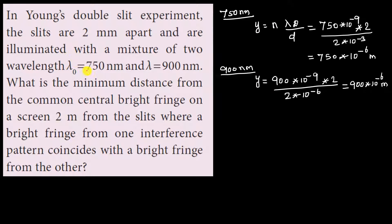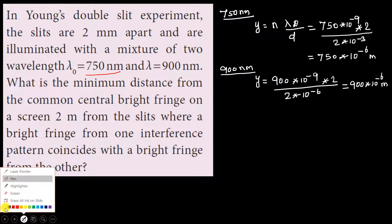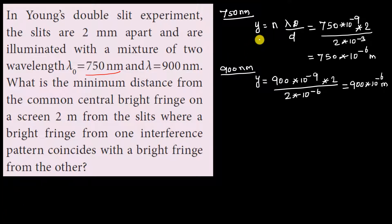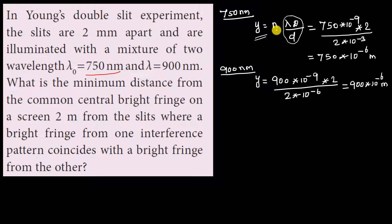First, for 750 nm wavelength, we use the formula y equals n times lambda times D divided by d. The fringe positions are: y₁ for n=1, y₂ for n=2, y₃ for n=3, and so on. We need to find the distance where coincidence occurs.